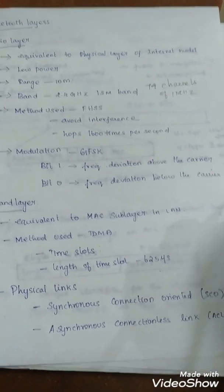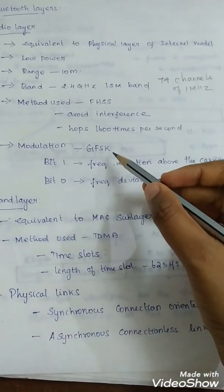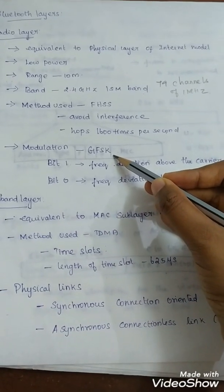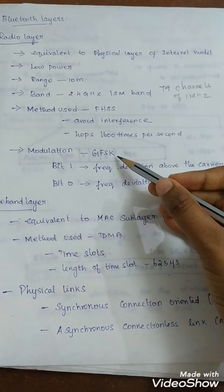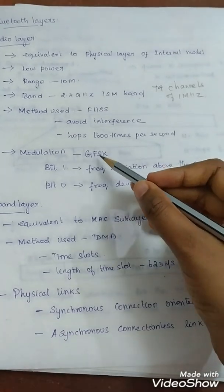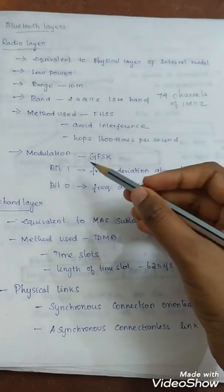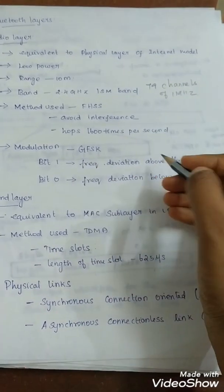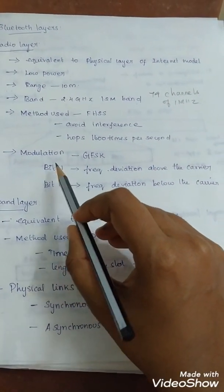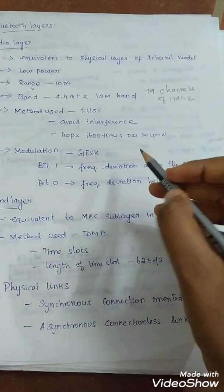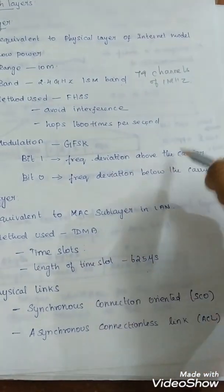The modulation used is GFSK: Gaussian frequency shift keying modulation. It is FSK with Gaussian bandwidth filtering. GFSK has a carrier frequency. Bit 1 is represented as frequency deviation above the carrier.